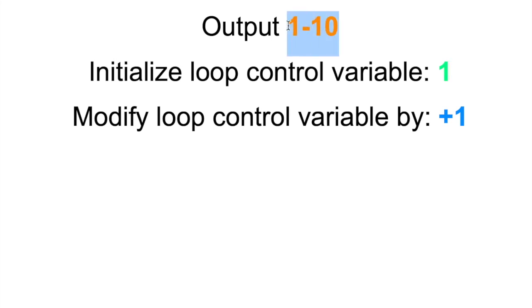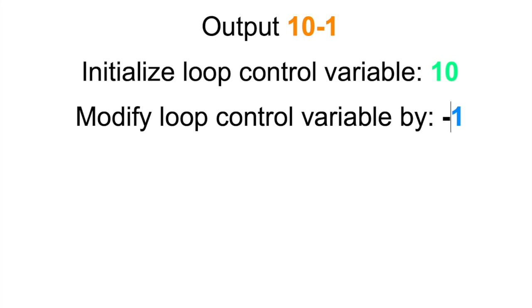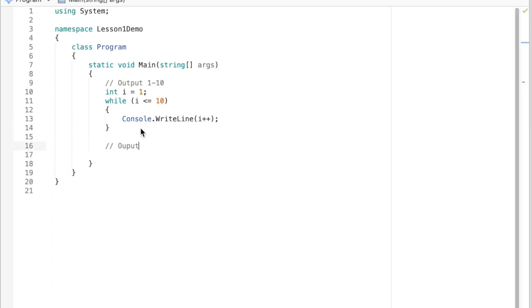Okay, next one: let's go from 10 down to 1. It's not going to be initialized to 1 and incremented by plus one. Go ahead and pause the video and see if you can come up with what we'll initialize the loop control variable as and how we'll modify the loop control variable. We want to initialize it to 10, because we're starting our output at 10. To count down from 10 to 1, we need to decrease the value by one.